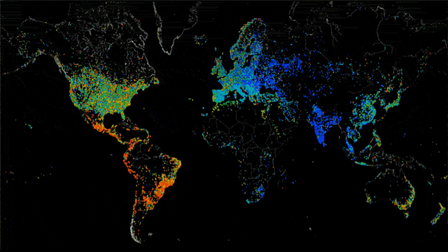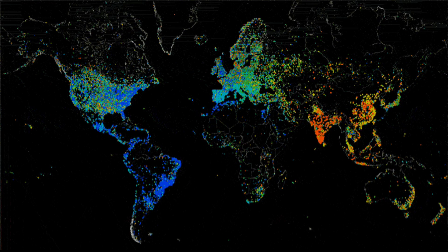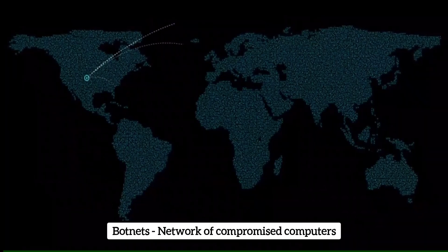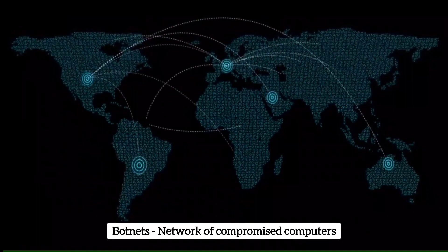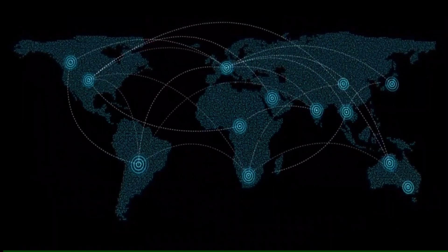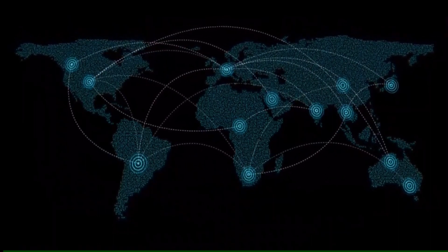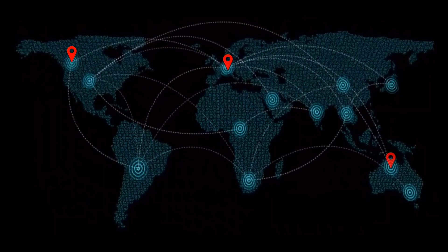Brute force attacks can originate from anywhere on the internet. Attackers often use botnets, which are networks of compromised computers, to distribute attacks across various IP addresses and avoid detection. Attackers deploy their automated scripts and password cracking programs on multiple computers within the botnet simultaneously, and each bot carries out a portion of the attack attempting different combinations of usernames and passwords. By distributing attempts across various IP addresses, the attack becomes harder to trace and helps attackers evade intrusion detection systems looking for suspicious patterns.